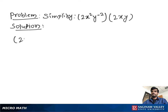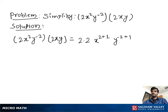Simplify 2x squared y to the negative 2 times 2xy. We multiply 2 times 2, then we add the exponents with the same base, so we get x to the 2 plus 1 and y to the negative 2 plus 1. That gives us 4x cubed y to the negative 1. To make the power of y positive, we move y to the bottom, giving us the answer 4x cubed over y.